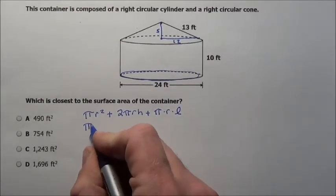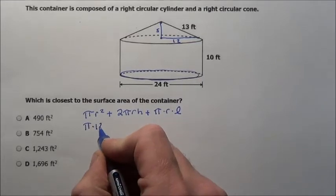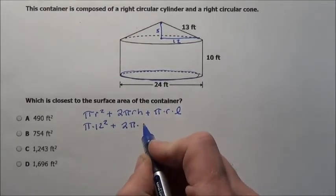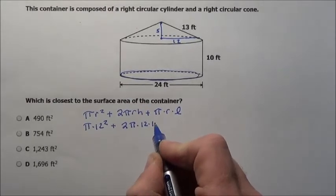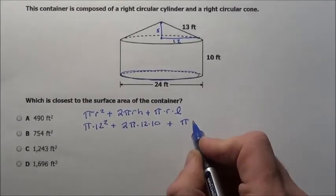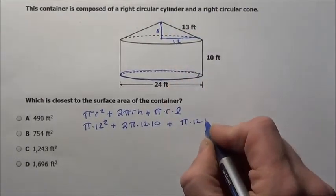So when we put it all together, I have pi times the radius, now again, distance all the way across is 24, so that's 12 plus 2 times pi times the radius of 12, height of 10, plus pi times the radius of 12, times this slant height of 13.